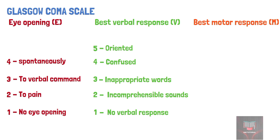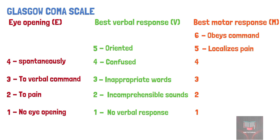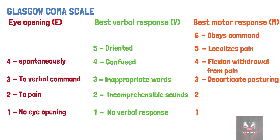The best motor response score ranges from 1 to 6 and is scored as follows. It is given a score of 6 if the patient obeys command. It is scored 5 if the patient can localize pain. And it is scored 4 when there is flexion withdrawal from pain. It is given a score of 3 when the patient assumes a decorticate posture, in which the patient is stiff with bent arms, clenched fists, and legs held out straight.